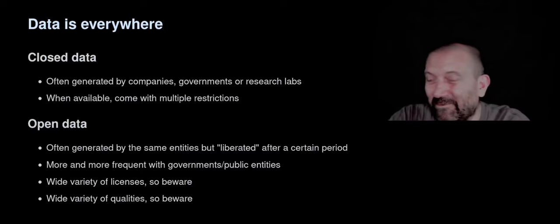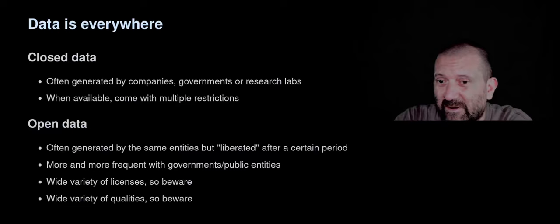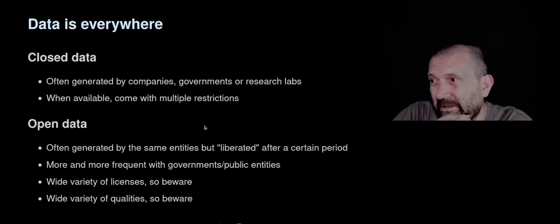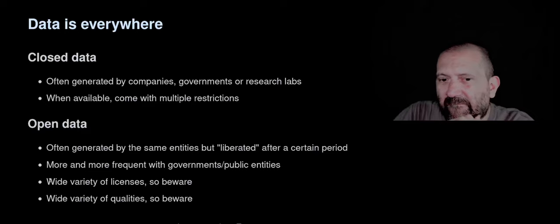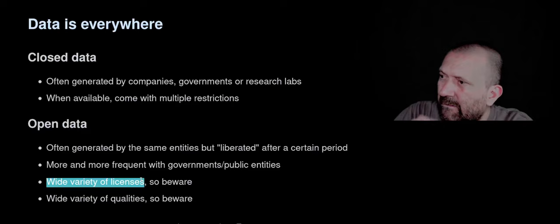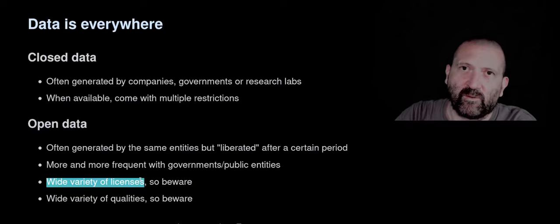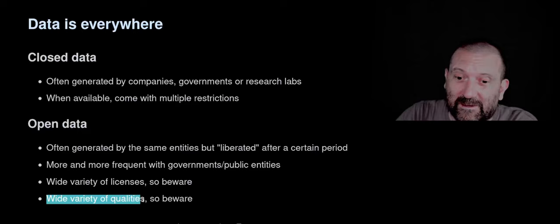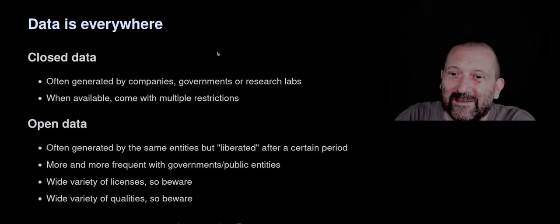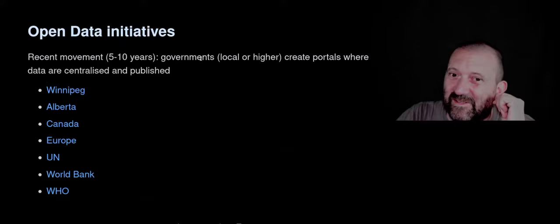There are different types of data: closed data and open data. Open data is liberated after a period or after anonymization. There is a wide variety of licenses, so if you're using data the fact that it's on the web doesn't mean you can necessarily use it — you have to read the license. And as we've seen abundantly with COVID, there's a wide variety of data quality, which is also something to be aware of.